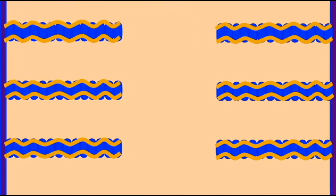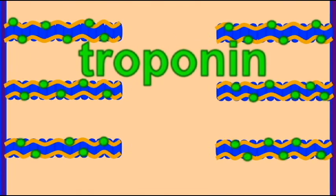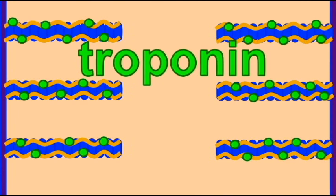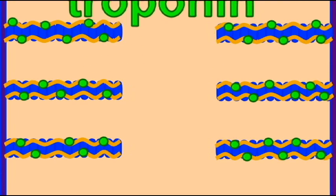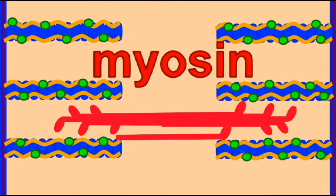The thick bands in the center of the sarcomere are made of the protein myosin. Myosin proteins can not only swivel, but they can reach up, bind to an active site of actin, and swivel thereby yanking the actin filament.